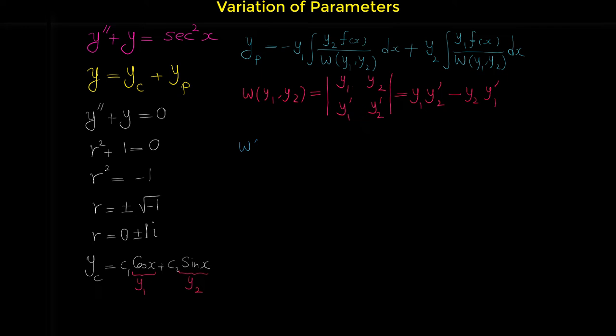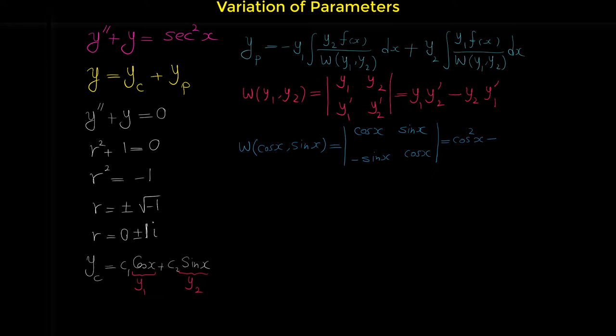The Wronskian of cosine x and sine x: put the two functions in the first row, and their derivatives in the second row. The derivative of cosine x is negative sine x, and the derivative of sine x is cosine x. Evaluating the determinant: cosine x times cosine x equals cosine squared x, minus sine x times negative sine x gives plus sine squared x, which equals 1, since sine squared plus cosine squared equals 1.